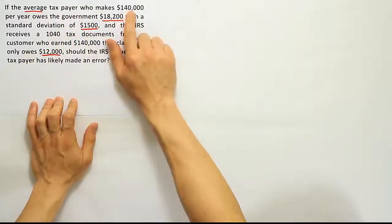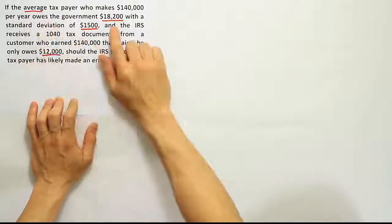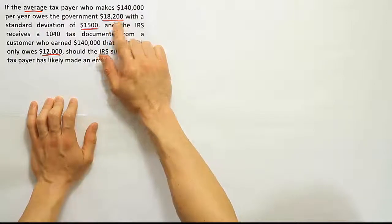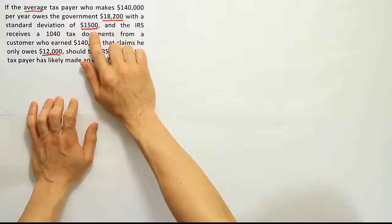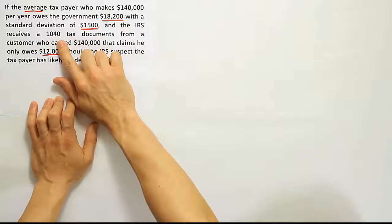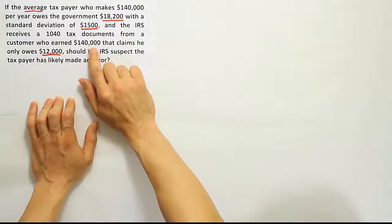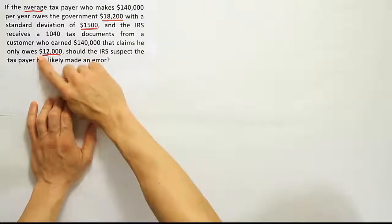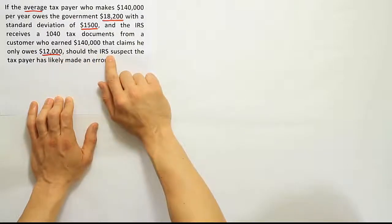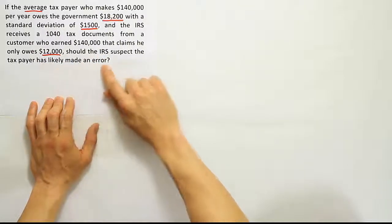If the average taxpayer who makes $140,000 per year owes the government $18,200 with a standard deviation of $1,500, and the IRS receives a 1040 tax document from a customer who earned $140,000 that claims he only owes $12,000, should the IRS suspect the taxpayer has likely made an error?